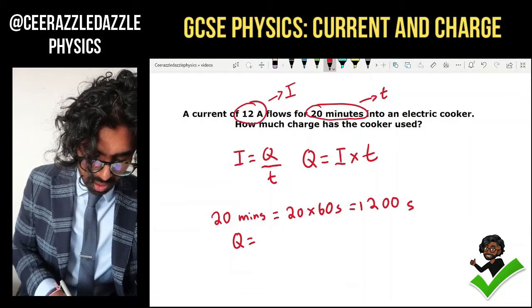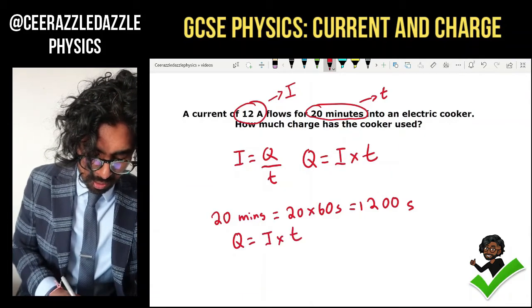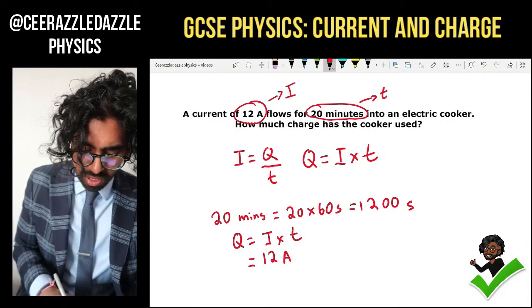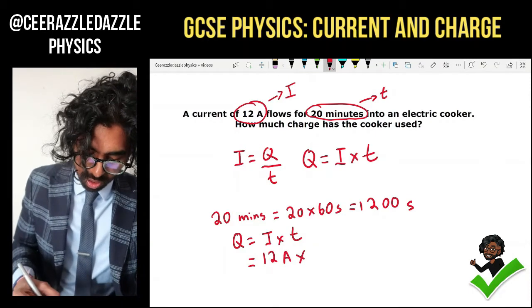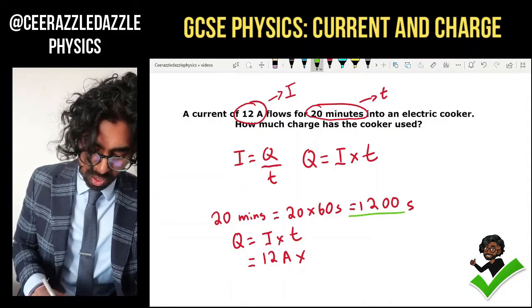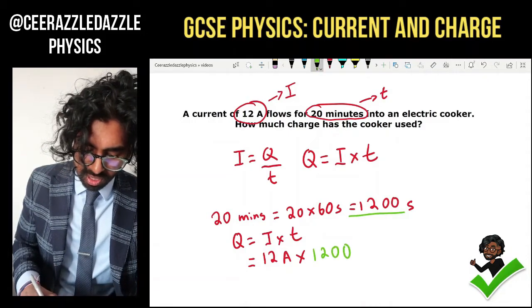Right, so Q is equal to I times by t. Therefore I, you know, it's going to be 12 amps times by the time. The time, I've got 20 minutes. Therefore we now know that's going to be 1,200 seconds.